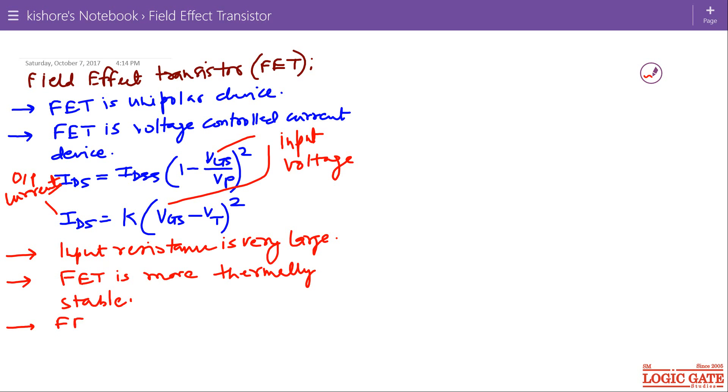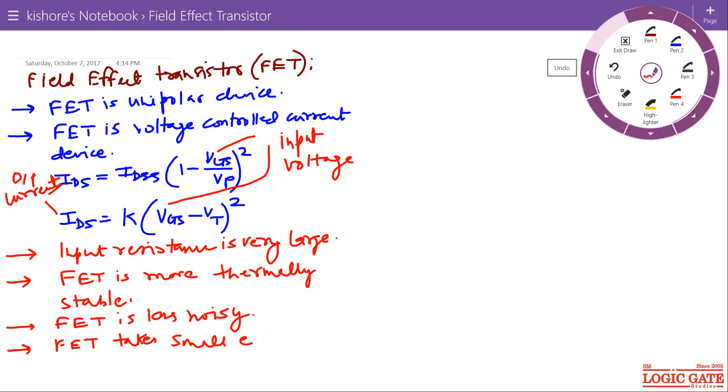FET is less noisy as compared to BJT and the compact density, in other words we can say FET takes small area in IC as compared to BJT. FET takes small area in IC, integrated circuit.